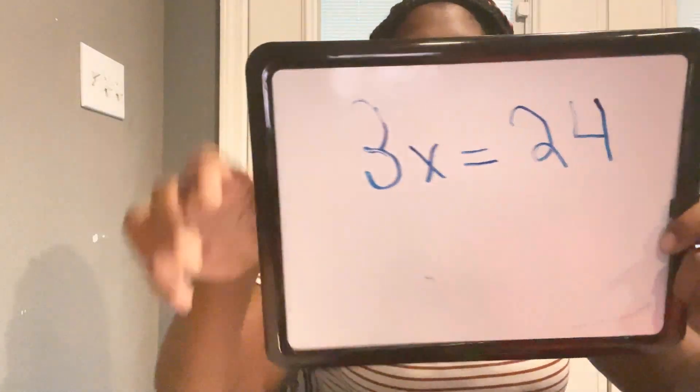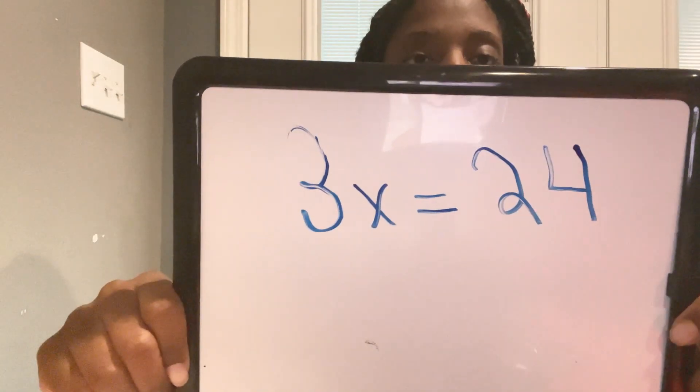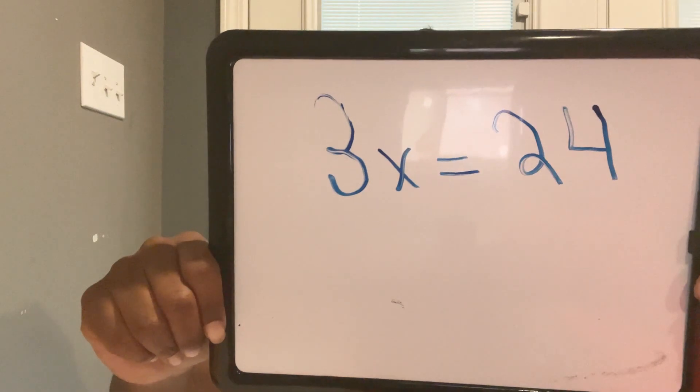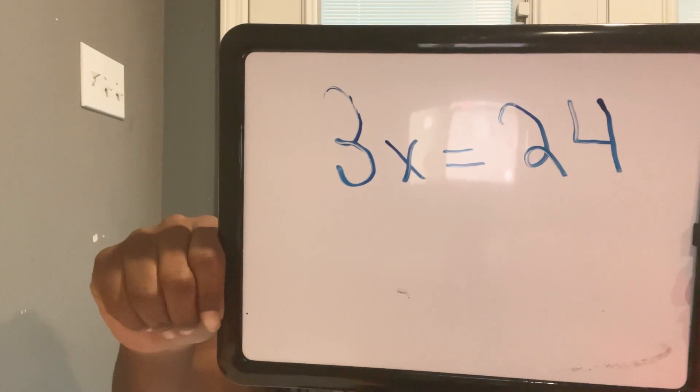Now that you've got the hang of exponents, let's move on. We're about to start solving some problems. Get a pen and a piece of paper because we're going to solve these together. Solve this problem: 3x equals 24.